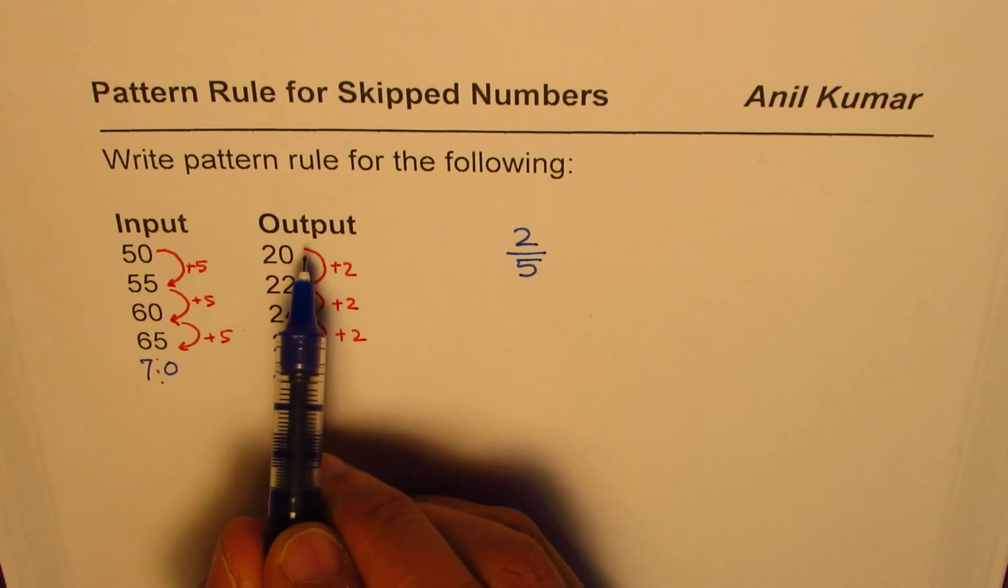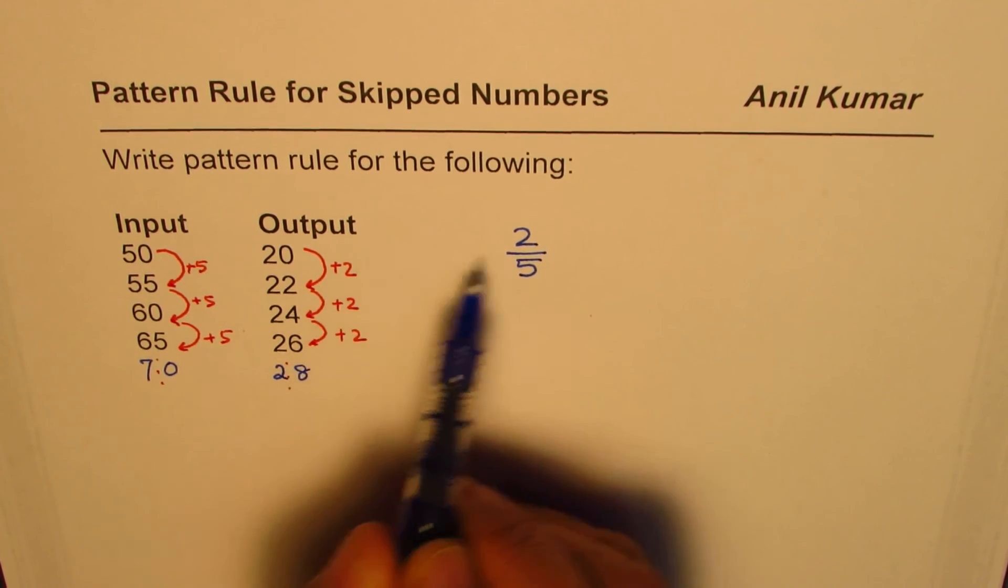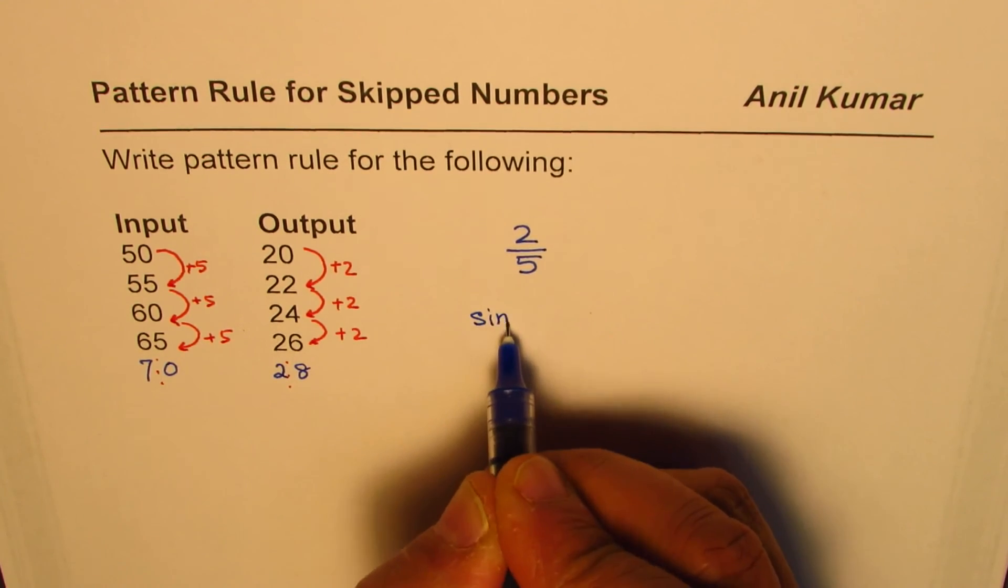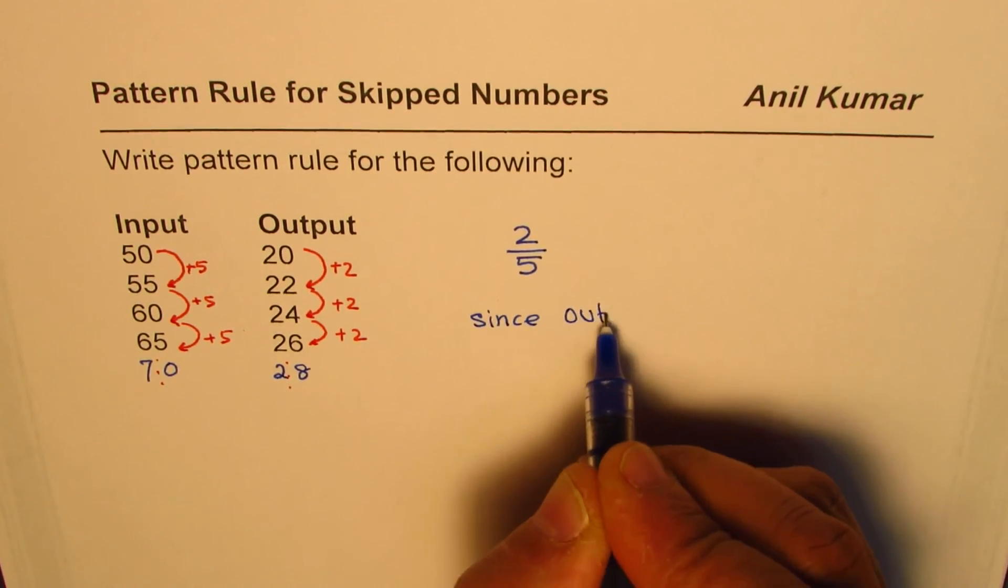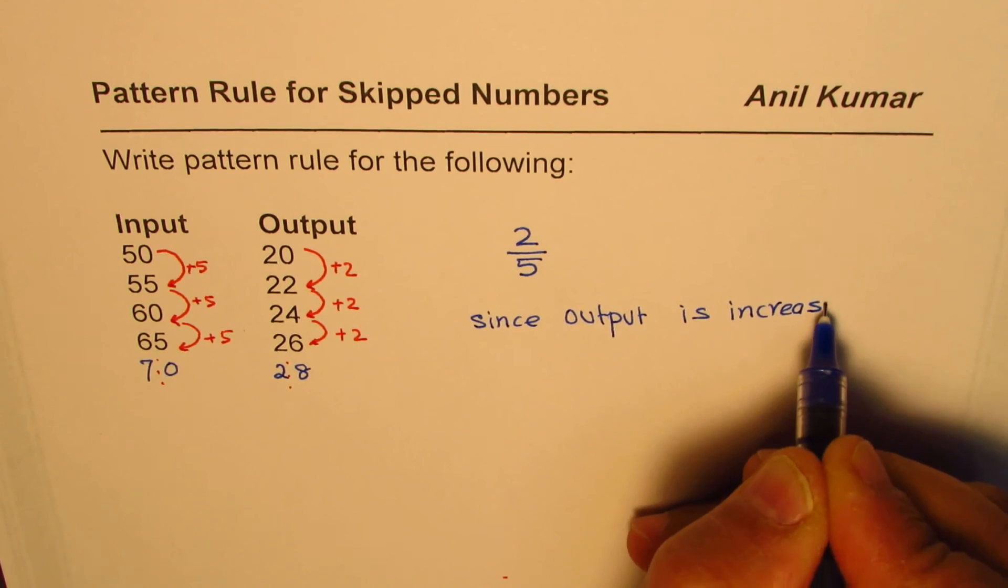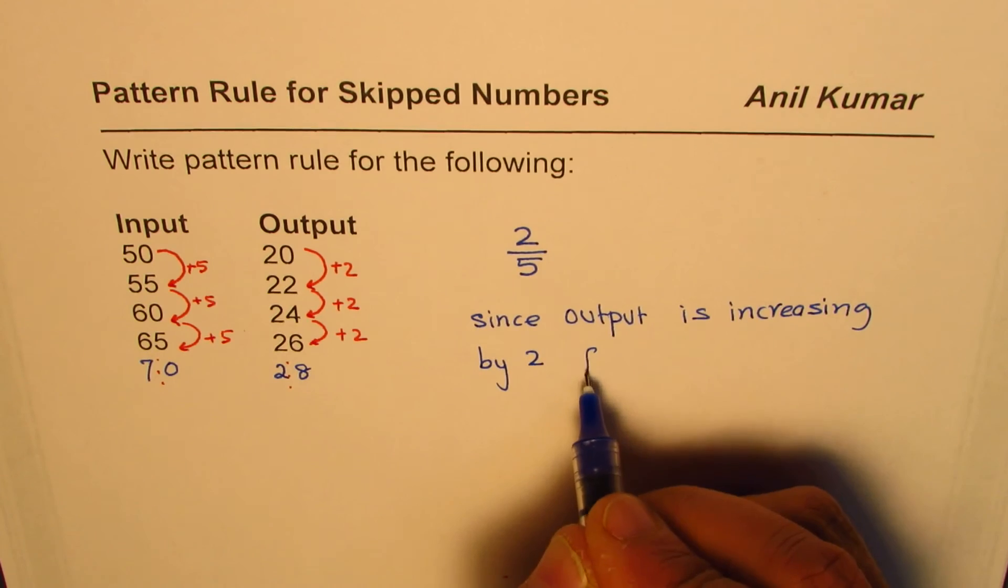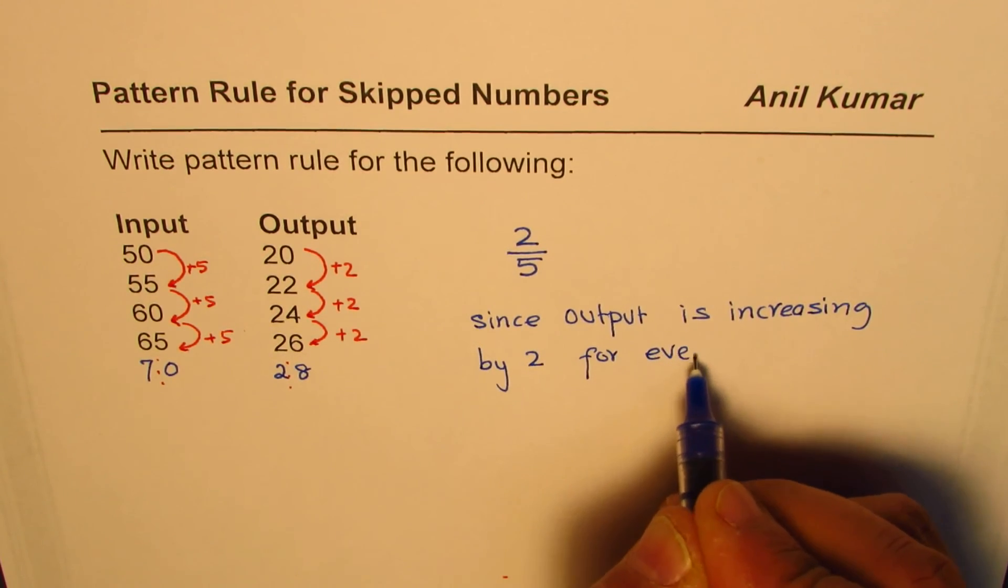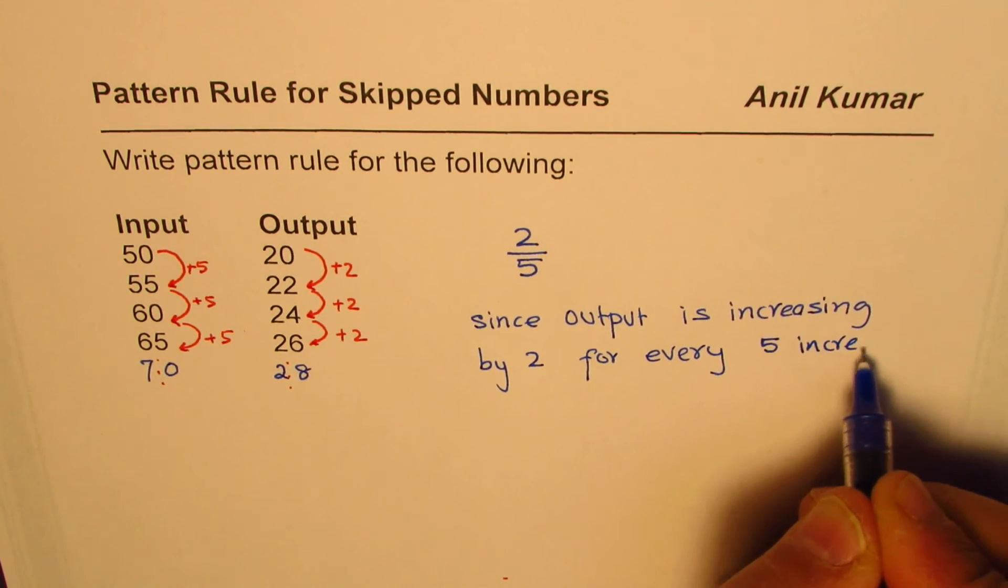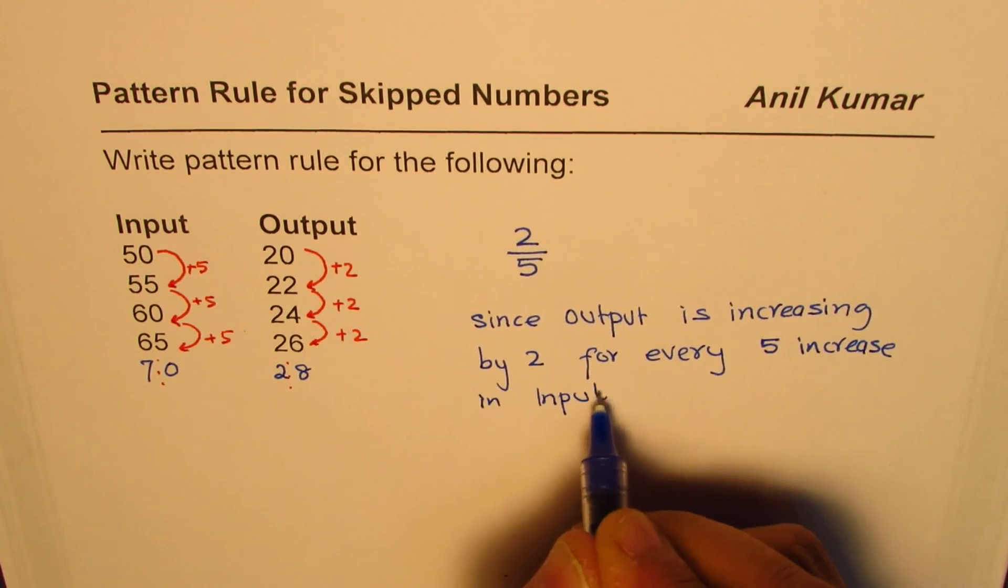Now let's get back to this statement. Since output is increasing by 2 for every 5 increase in input - let me write it down - since output is increasing by 2 for every 5 increase in input.